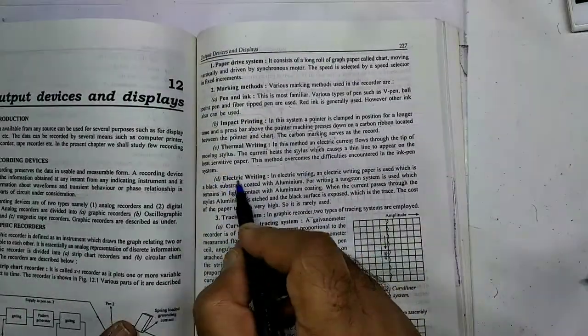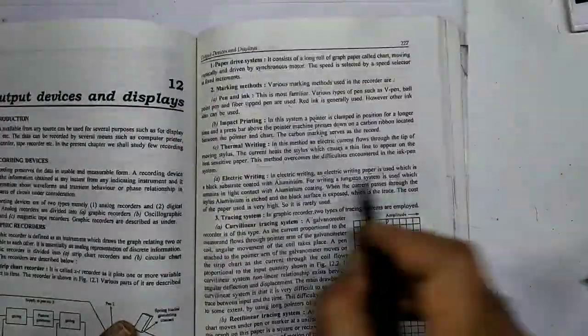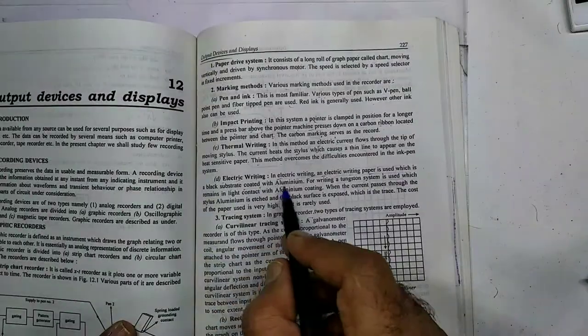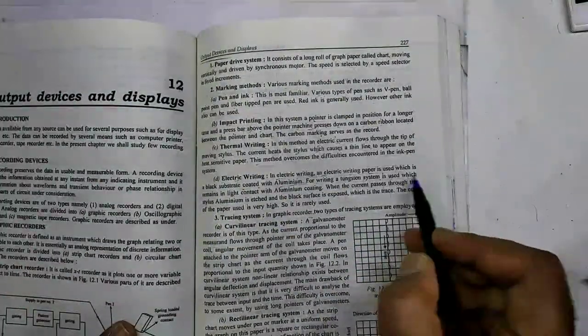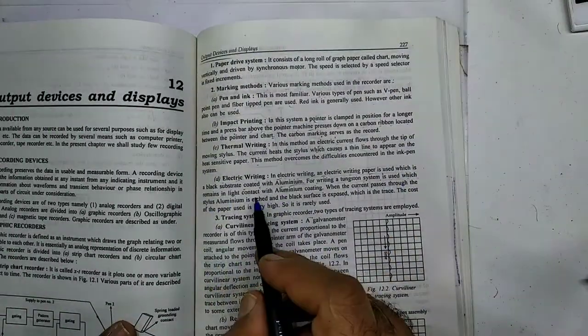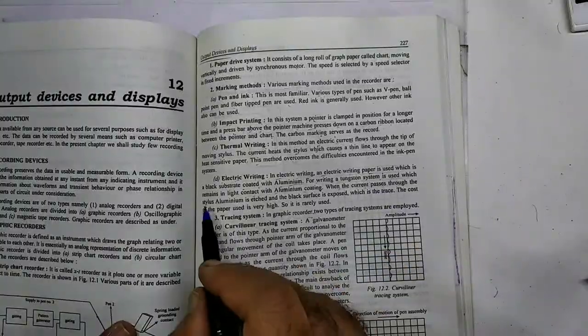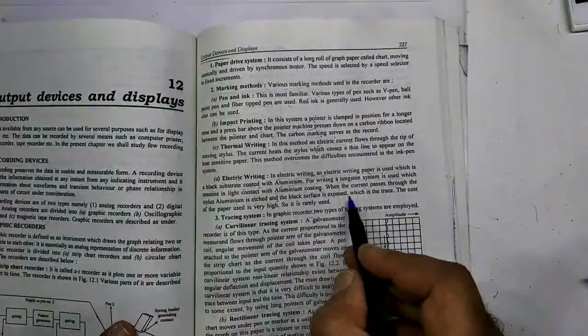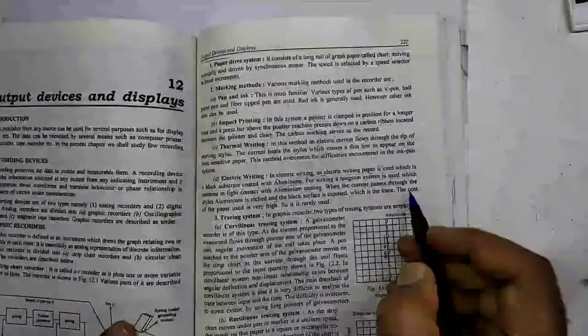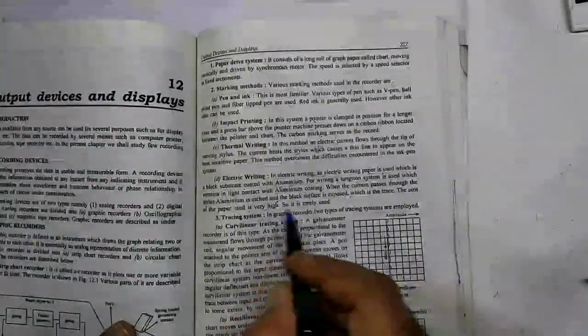Next is electric writing. In electric writing, an electric writing paper is used which is a black substrate coated with aluminum. For writing, a tungsten stylus is used which remains in light contact with the aluminum coating. When the current passes through the stylus, aluminum is etched and black surface is exposed which is the trace.